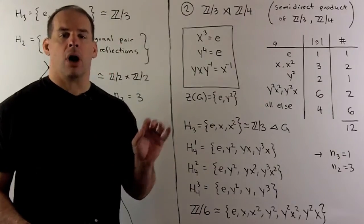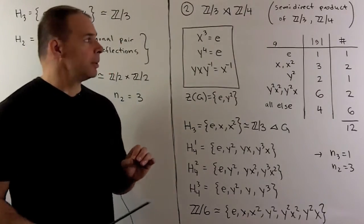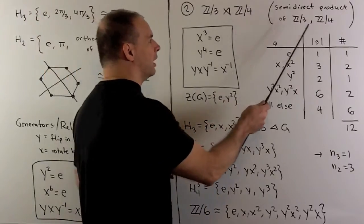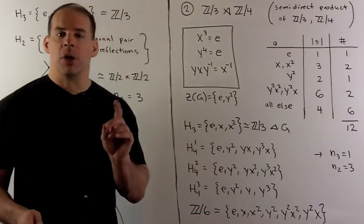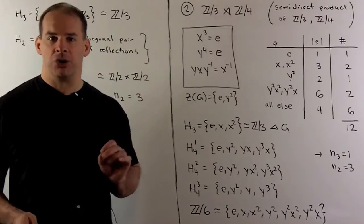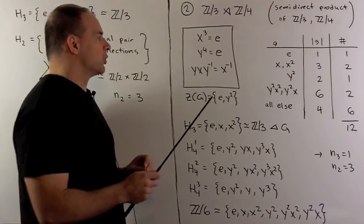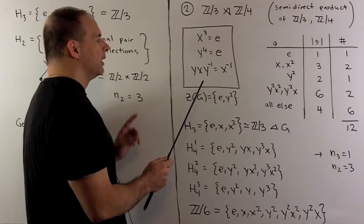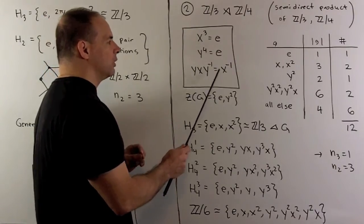Now, our other isomorphism type. We're going to have what I'll call the semi-direct product of Z3 and Z4. So we'll just describe this in terms of generators and relations. We're going to have an element x of order 3, an element y of order 4, and we'll have yxy inverse equals x inverse.